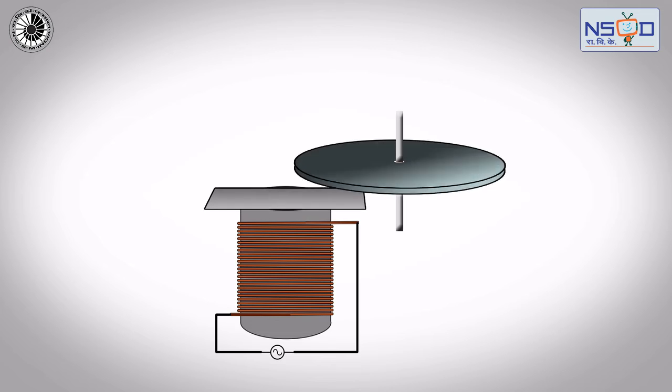At the central position, when the sheet totally covers the electromagnet, the eddy current is symmetrical and the rotation stops.